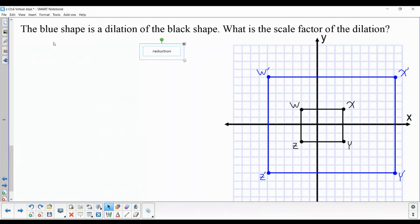In this problem, the blue shape is a dilation of the black shape. We have the black shape, and the blue shape is much larger. So we do not have a reduction.